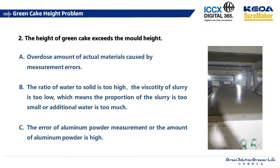In some other cases, the height problem is opposite — the height of the green cake exceeds the mold height. In this case, we should consider the measurement issue again. Maybe the ratio of water to solid is too high, meaning the preparation of the slurry is too thin or the additional water is too much. During the trial production stage, we should also check the aluminum powder measurement, as errors or excessive aluminum powder amount can cause this. At the beginning of AAC plant running, we found it often happens that the amount of two molds of aluminum paste are added to one mold.